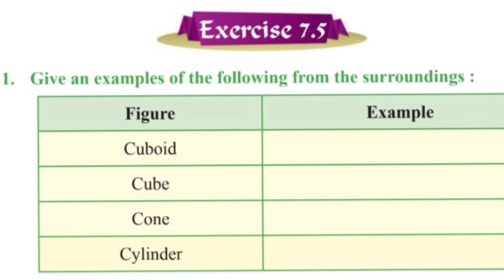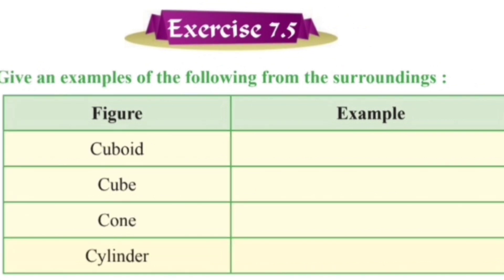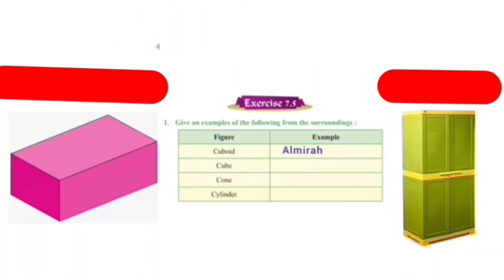Question number 1 of exercise 7.5 is: give an example of the following from the surroundings. The first one is cuboid. Dear students, we all have almirahs at our homes. These almirahs are of the shape of a cuboid. So, the example of cuboid is almirah.